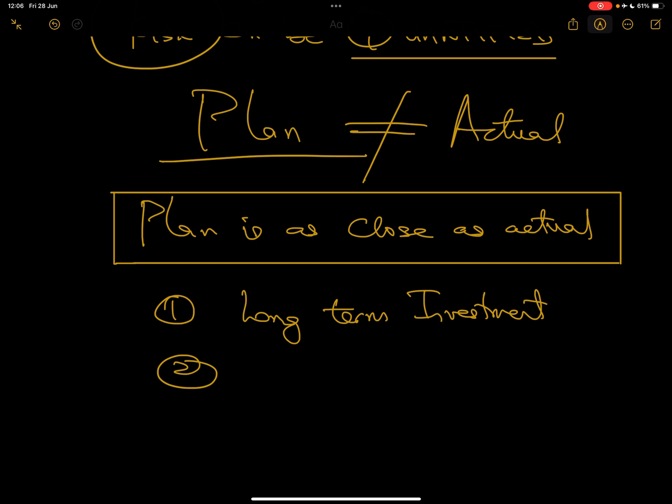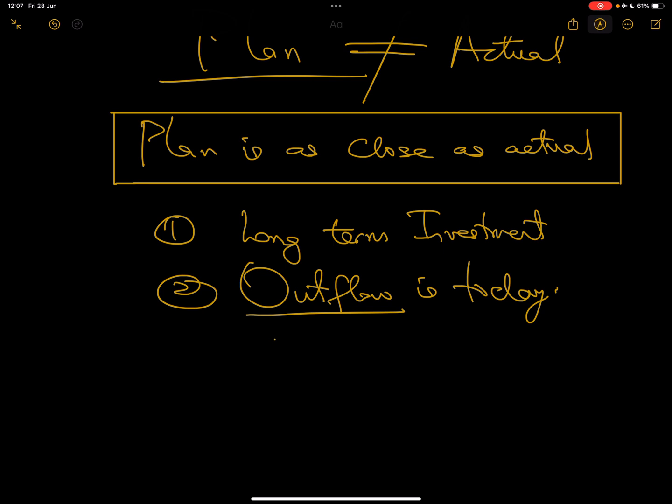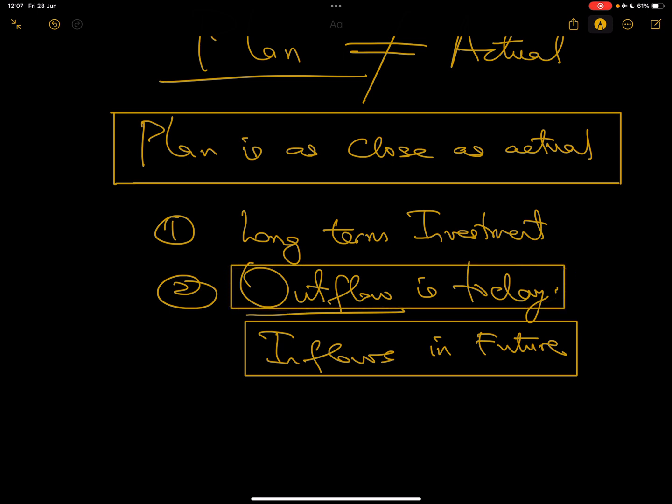When you consider the long-term nature of investment, a series of activities and events will happen that can make your plans not be the same as actual. Also, the outflow is always today, which means you invest today, so you lose money today with anticipation of inflows in future. That is the element of risk. You are taking risk on future inflows by losing money today. Also the fact that you don't get all your money back today, you get it over a long period of time, is a risk. All of these are components of the risk.